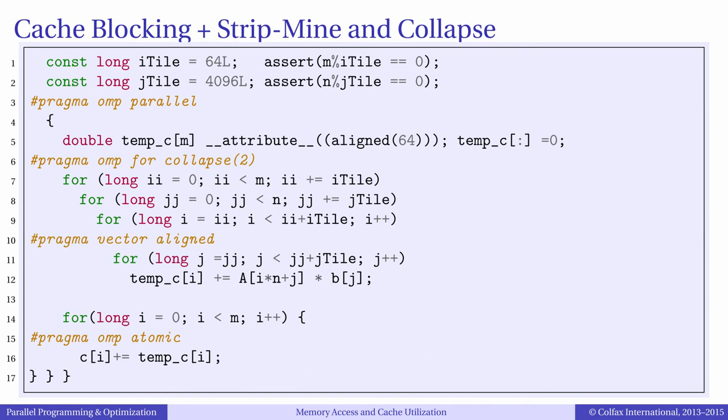This code shows the next optimization step for matrix vector calculation. Compared to the previous code we now have strip mined loop in double i and the OpenMP loop has the clause collapse too. This clause expands the number of iterations exposed to OpenMP. The strip width for the i loop is chosen as 64. This value is empirical just like the value of jtile. In other words we had to try different values until we finally settled on those.